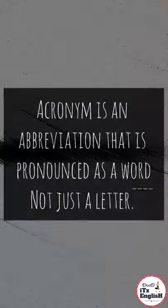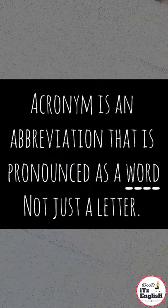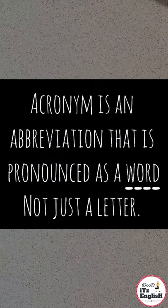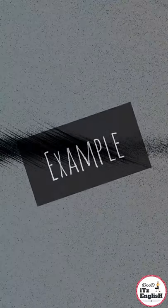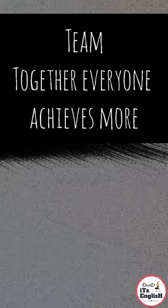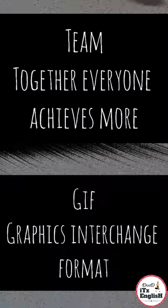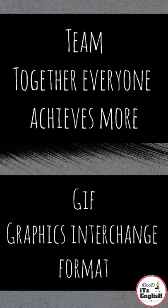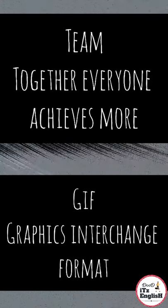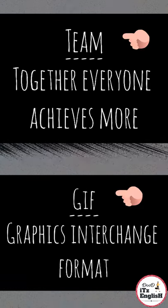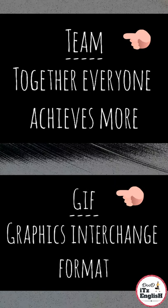Next, an acronym is an abbreviation that is pronounced as a word, not just a letter. Example: TEAM — Together Everyone Achieves More. GIF — Graphics Interchange Format. Here you can see all the letters together are pronounced as a word, not just a letter.